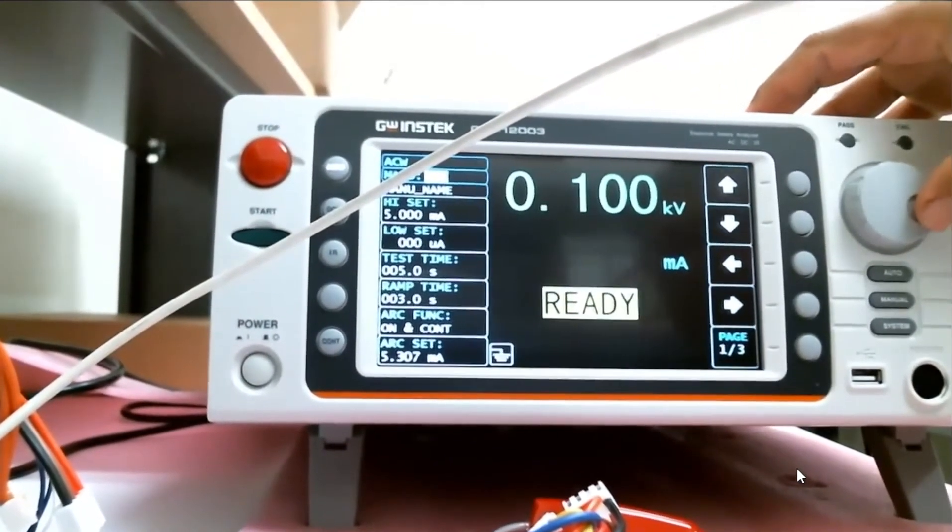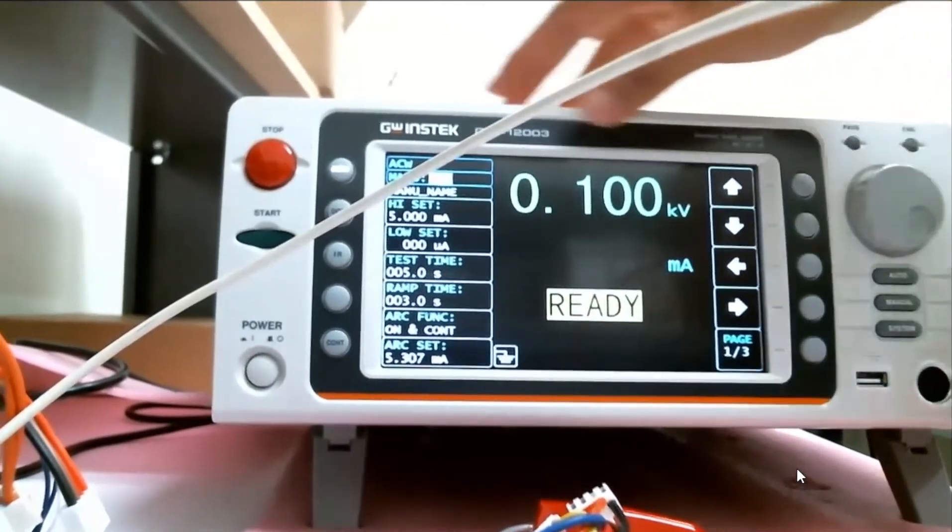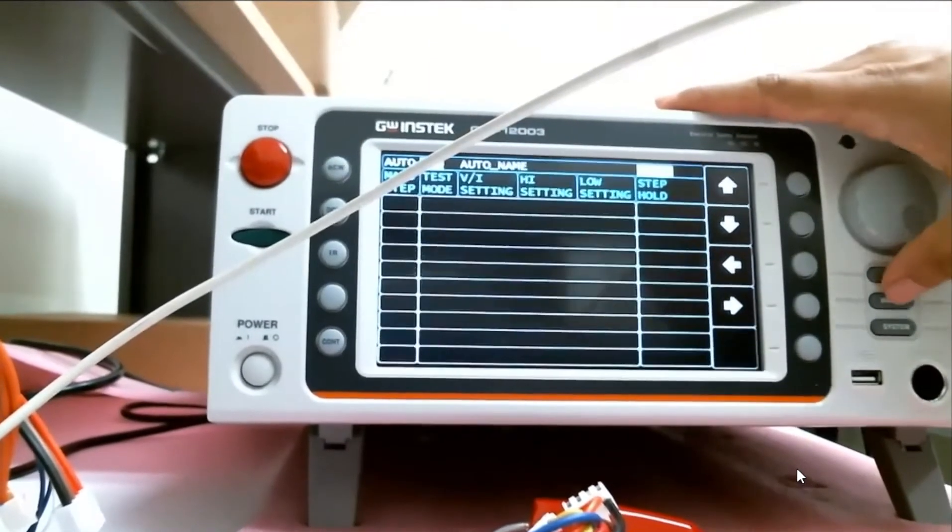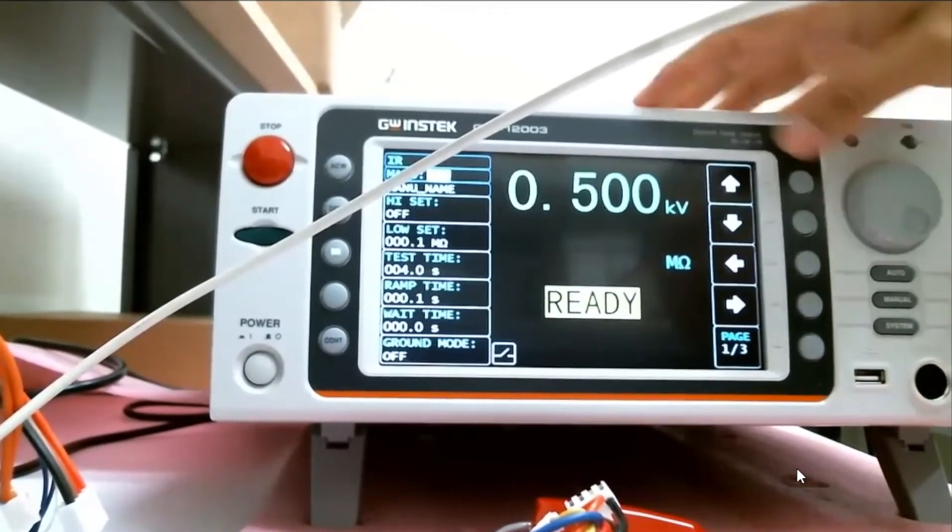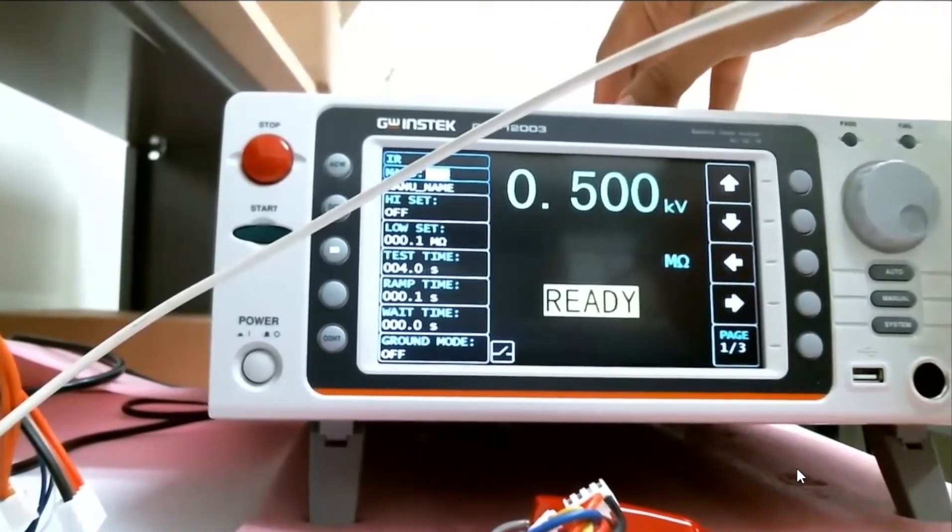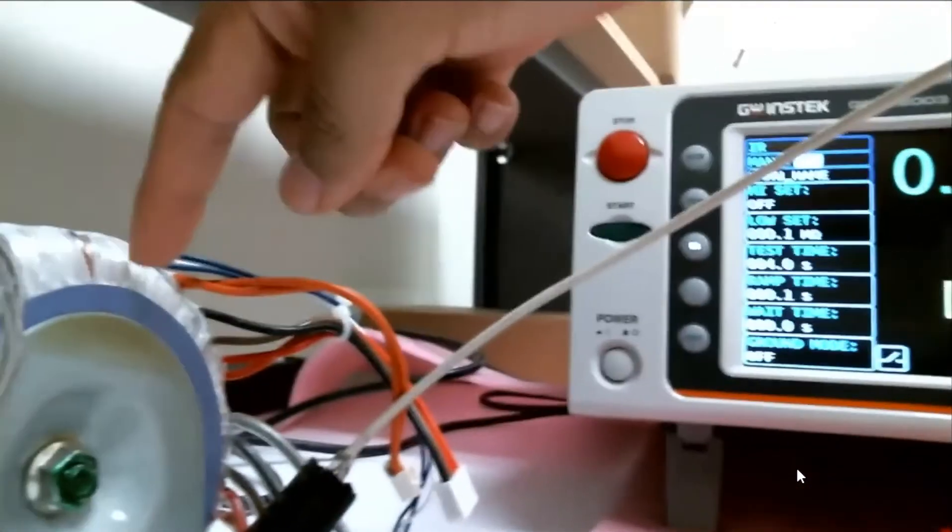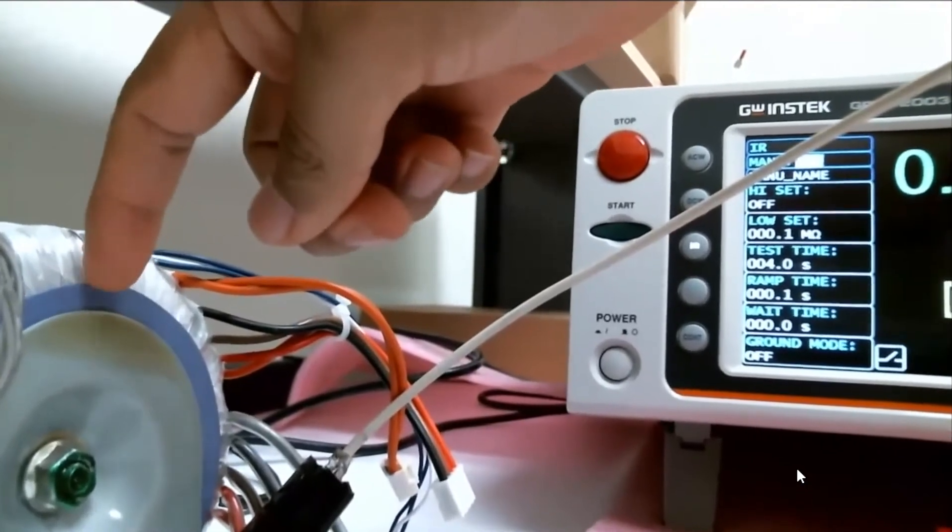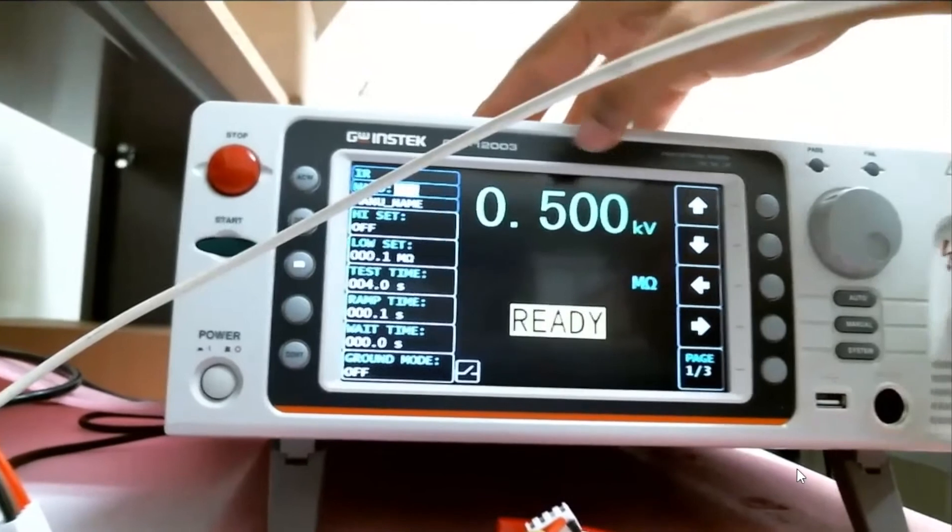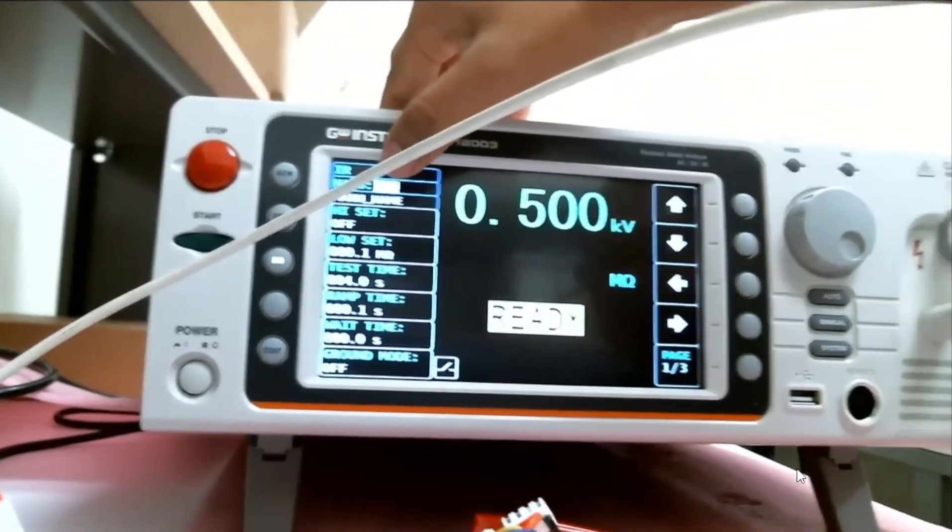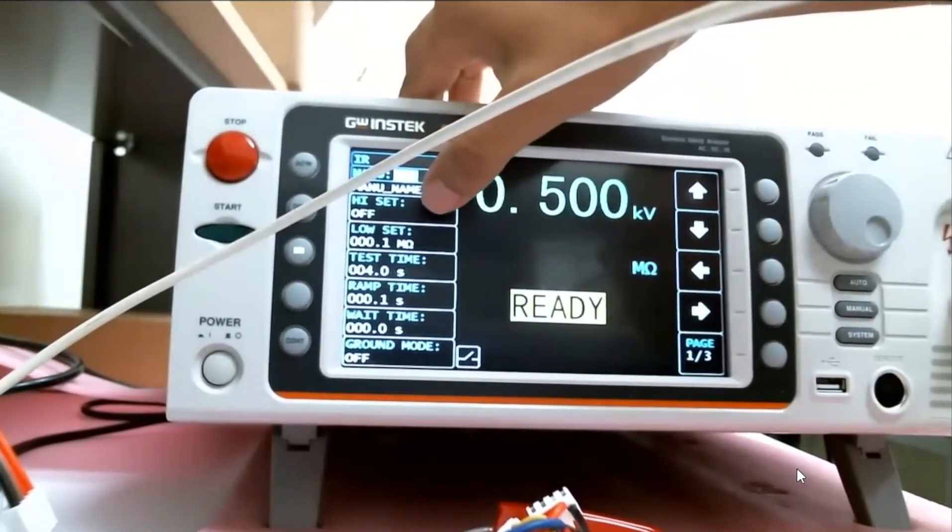The other test I would run here is my IR test. So I'm measuring the impedance of this little thing right here, this isolated piece of rubber, at 500 volts. There is no high set in this case, there is a low set. My test time is 4 seconds.